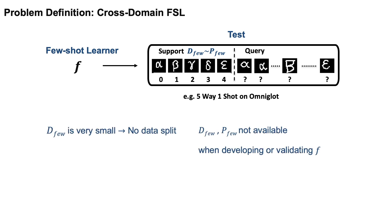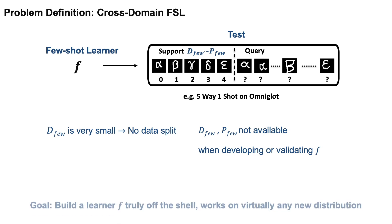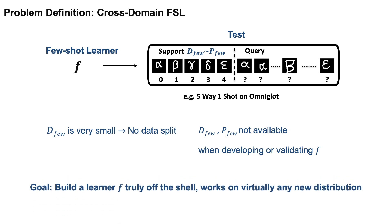However, the few-shot samples are very small, so we cannot afford any data split. Neither the sample nor its distribution is available to us when developing or validating the learner app. The goal is to build a learner app that is truly off the shelf and works on virtually any new distribution.